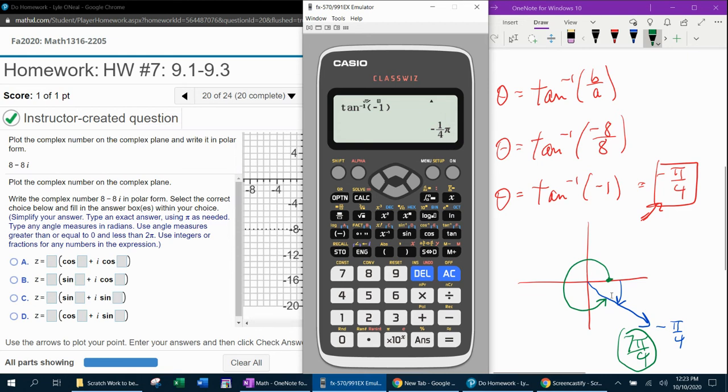And then if I want the equivalent positive angle, I would need to go a full circle, which means I need to add 2 pi to that angle. If I go a full circle, 360 degrees, which is 2 pi, that's going to put me back in the same location, but that's going to give me a positive answer. And that's how we get our 7 pi over 4 with the calculator.